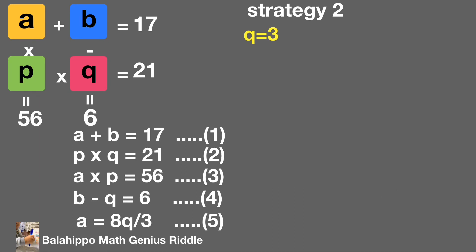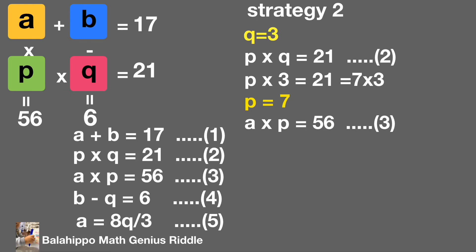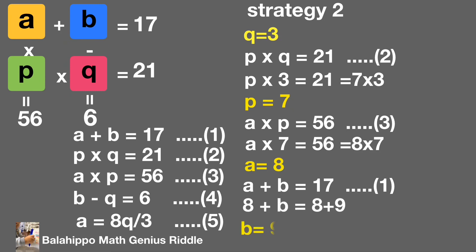Substitute Q by 3 in equation 2, P times Q equal to 21, get P equal to 7. Then substitute P by 7 in equation 3, A times P equal to 56, get A equal to 8. Then substitute A by 8 in equation 1, A plus B equal to 17, so B equal to 9.